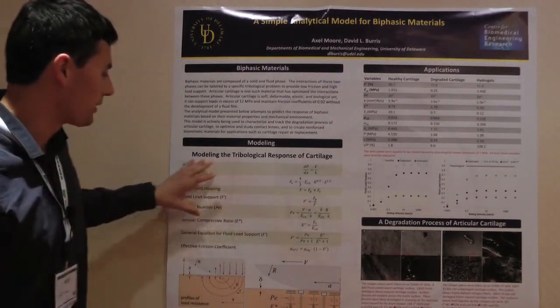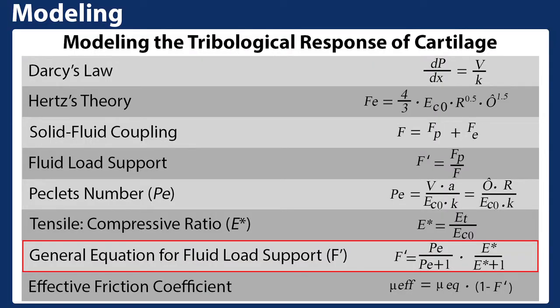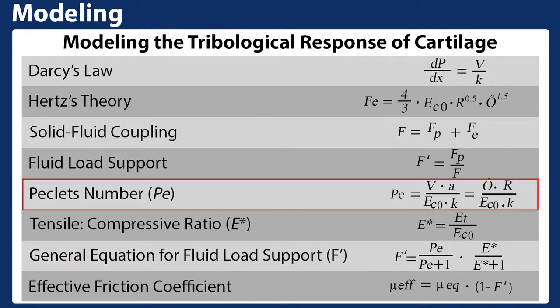What our model accounts for comes down to an equation where fluid load support — the amount of load supported by fluid pressure — equals Péclet number over Péclet plus 1, times E* over E* plus 1. The Péclet number is defined as velocity times the contact area over aggregate modulus over permeability, or as a function of indentation rate.